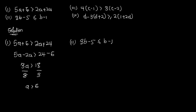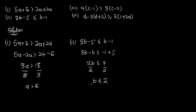For inequality (ii): 3b minus 5 less than or equal to b minus 1. I maintain 3b and send b to the other side as minus b, and send negative 5 to the other side as plus 5. So 2b is less than or equal to negative 1 plus 5, which is 4. Dividing both sides by 2 gives b is less than or equal to 2.